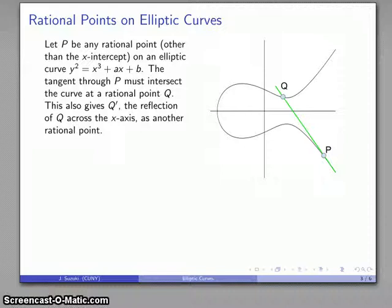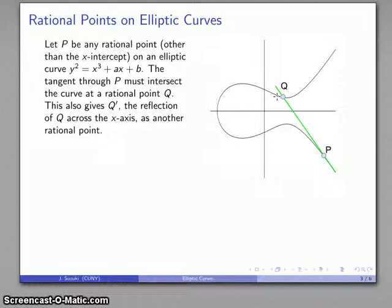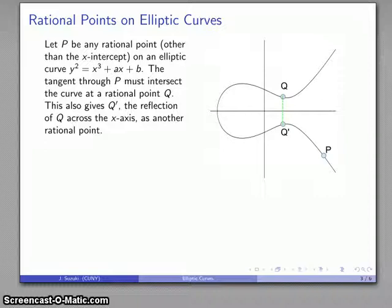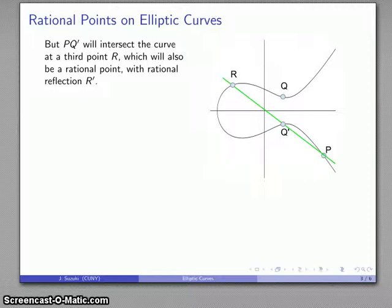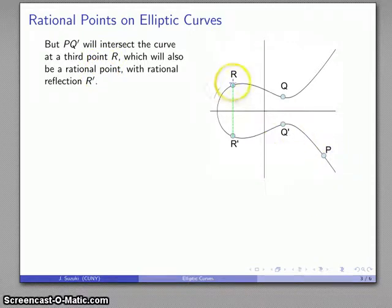Because of the symmetry of the elliptic curve y² = x³ + ax + b, the y² term means the curve is symmetric about the x-axis. So if I have point q as a rational point, its reflection q' is also a rational point. Now given this first rational point, I have another and another. I have two distinct rational points, and I can draw the line through them, which intersects another point r — which is also rational — and its reflection r' is likewise a rational point.